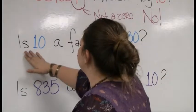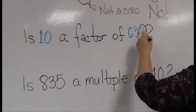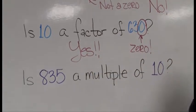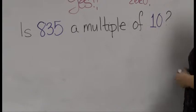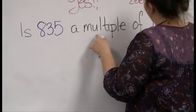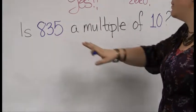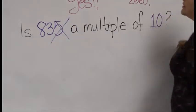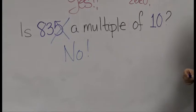Is 10 a factor of 630? Look at the final digit — 630 sure does end in a zero, so the answer is yes. Here's one that fools a lot of people on purpose: is 835 a multiple of 10? Our brains want to say yes because we're thinking of the fives trick, but be careful — the rule for tens requires a zero at the end. That's not a zero, so the answer is no. It might be a multiple of 5, but it's not a multiple of 10.